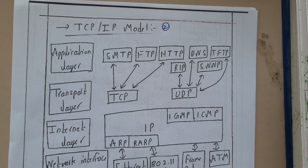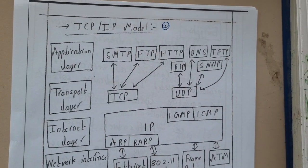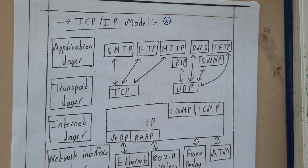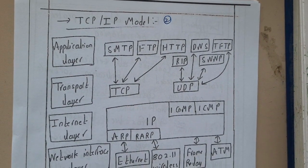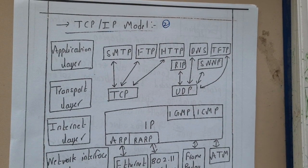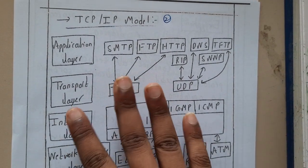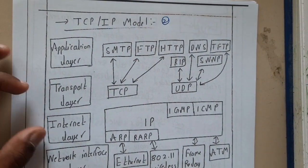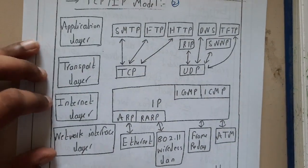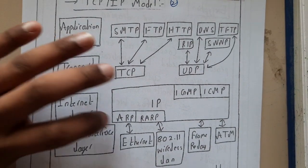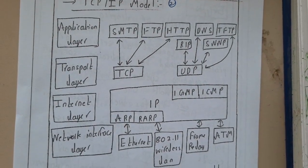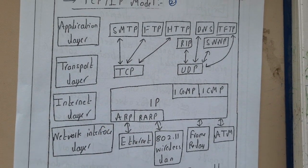We are back with our next lecture. Let us go through the TCP/IP model. The TCP/IP model is basically the same as the OSI model we discussed in our previous lecture, but here we have only four layers: Application layer, Transport layer, Internet layer, and Network Interface layer. These four layers use multiple protocols to communicate with each other and to perform multiple tasks.